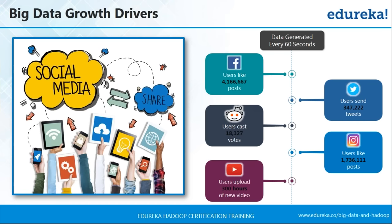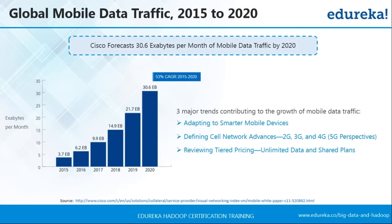That's a lot of data, and it has been rising exponentially over years. Cisco, one of the biggest networking companies, has monitored the data traffic they've been getting over years and published it in their white paper. From their stats, by 2020 we'll be dealing with 30.6 exabytes of data. One exabyte is 10 raised to the power 18 bytes. In 2015 we were only dealing with 3.7 exabytes, and now in just 5 years we're going up to 30.6 exabytes. The data has been rising exponentially and it can be more in coming years.